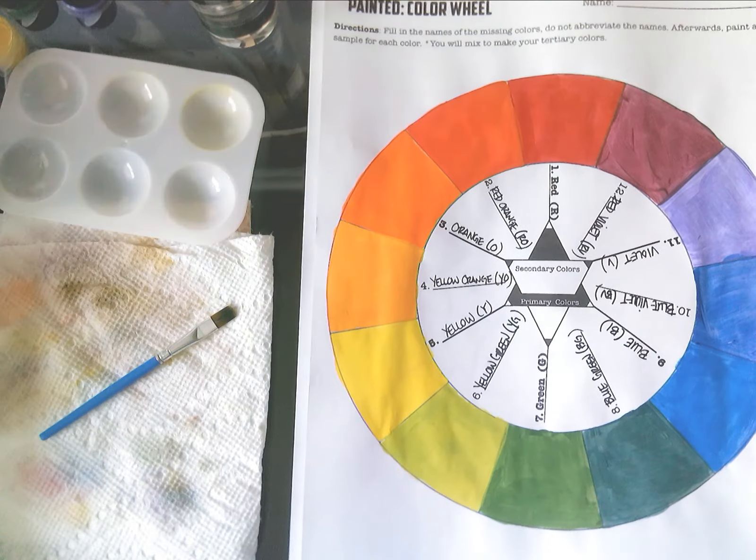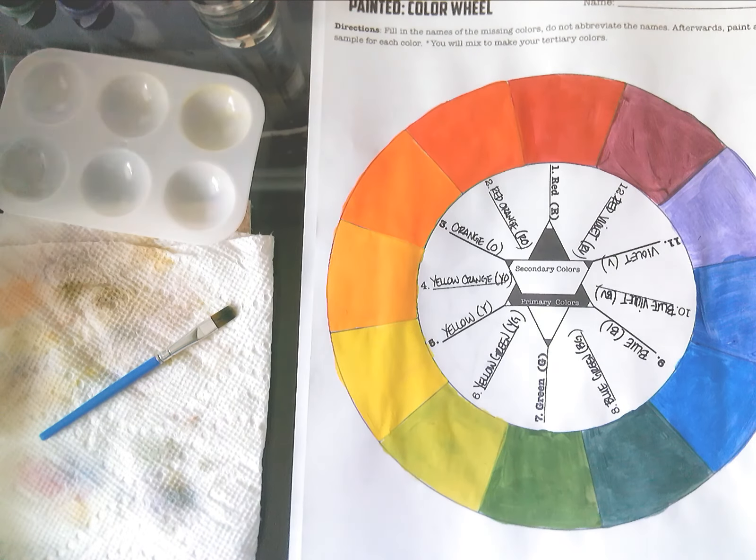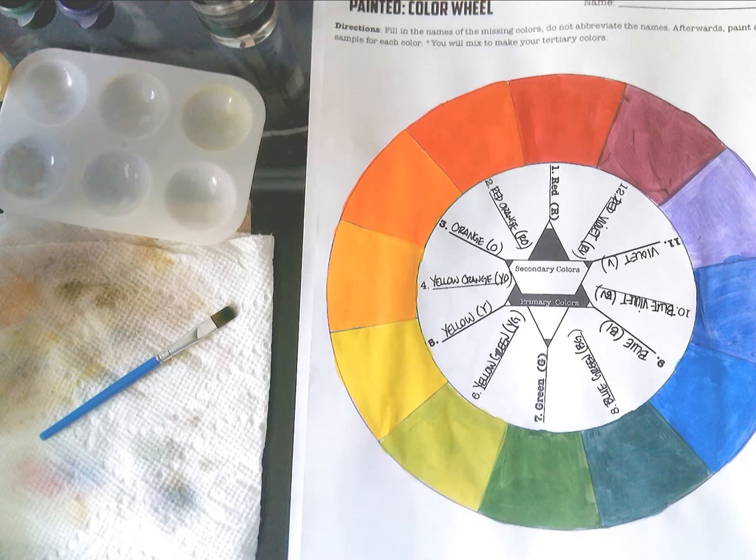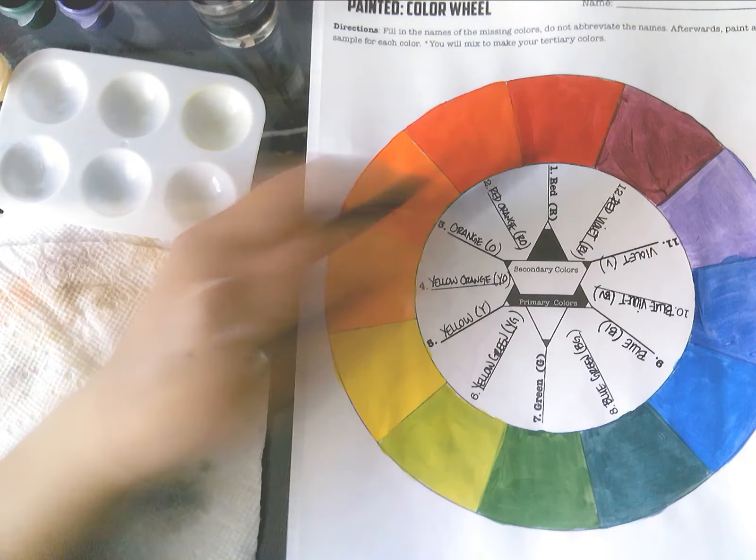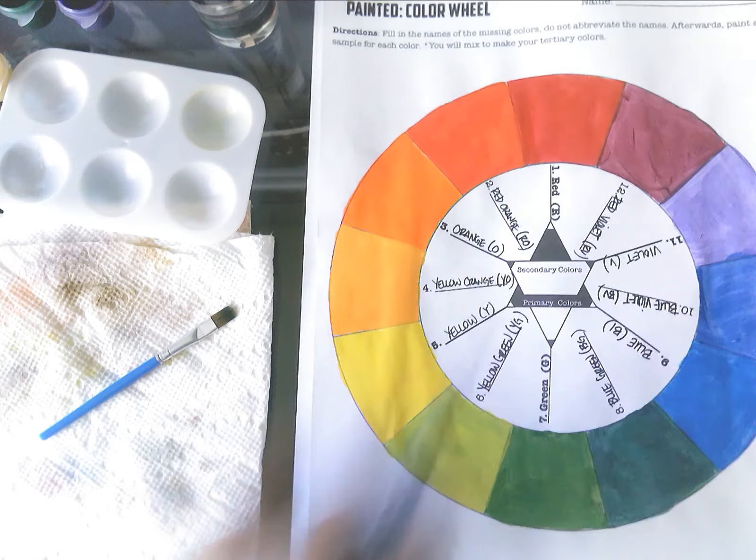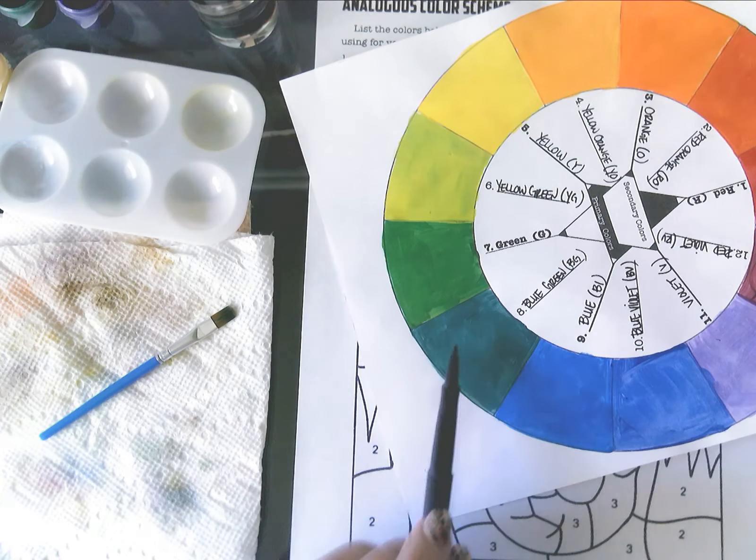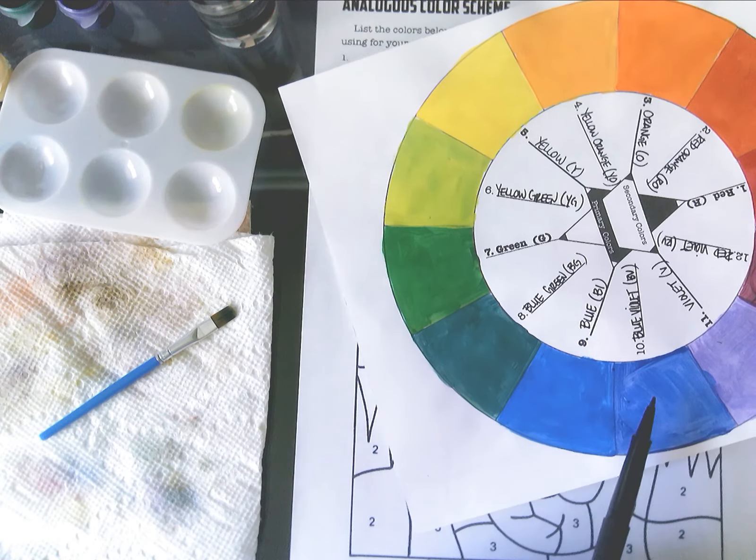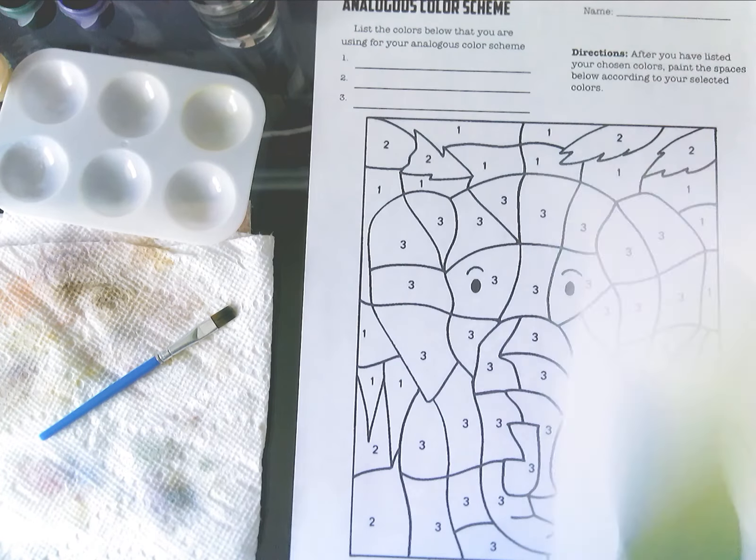When I look at my little palettes, I'm really low on red, so I'm going to avoid anything with a red tone in it. And I have a ton of the blue, so I'm actually going to choose blue-green, blue, and blue-violet as my analogous colors.